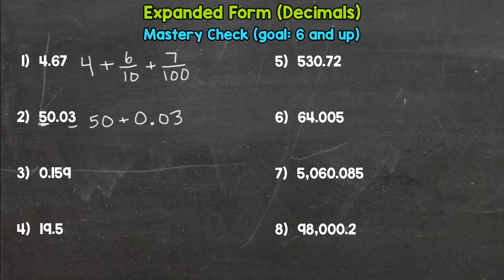Number three, we have a one with the value of one tenth plus a five with the value of five hundredths plus a nine with the value of nine thousandths.